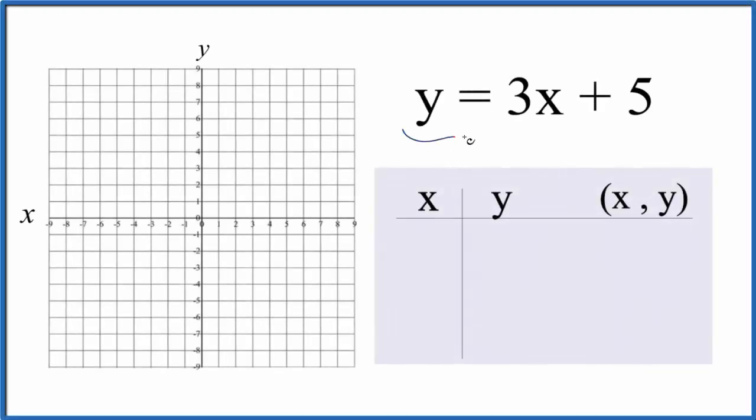Let's graph the linear equation for y equals 3x plus 5. And we're gonna do this two ways. First we'll use a table of values, then we'll check our work with slope-intercept formula.